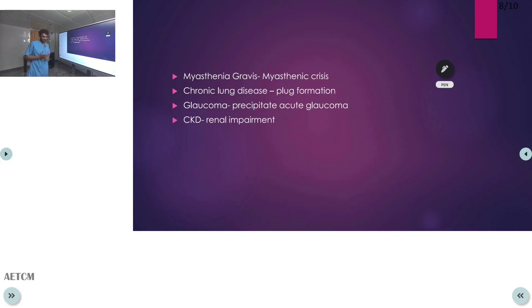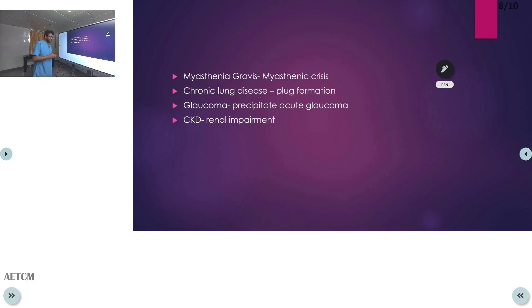We must be cautious while administering atropine. In myasthenic patients, it can cause myasthenic crisis. In chronic lung disease patients, atropine's anti-secretory action can cause mucus plug formation leading to desaturation. In glaucoma patients, atropine can precipitate acute glaucoma. In CKD patients, it can cause renal impairment with increased creatinine values.